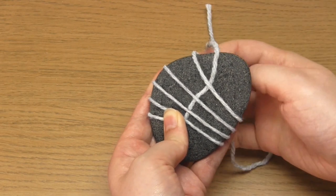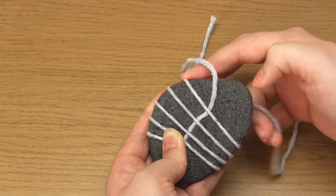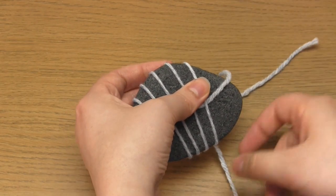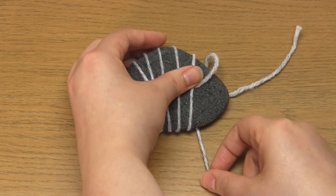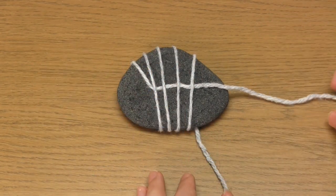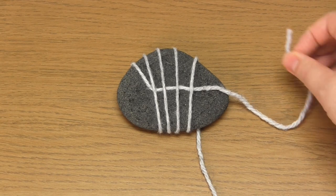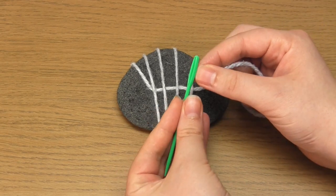Once you've done all of the wraps that you want make sure the working yarn is held in place so all of the yarn doesn't just fall off. To do this you can rest the pebble on the yarn, you can hold the yarn with your hand or you can use a little masking tape. Just make sure to use the tape in moderation because it can damage your yarn.